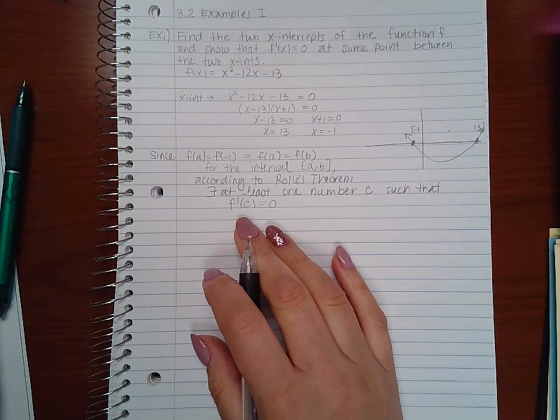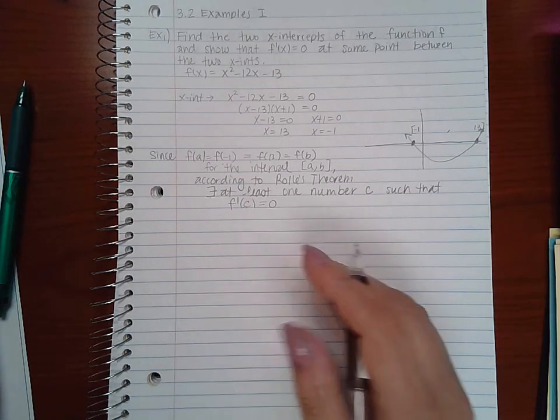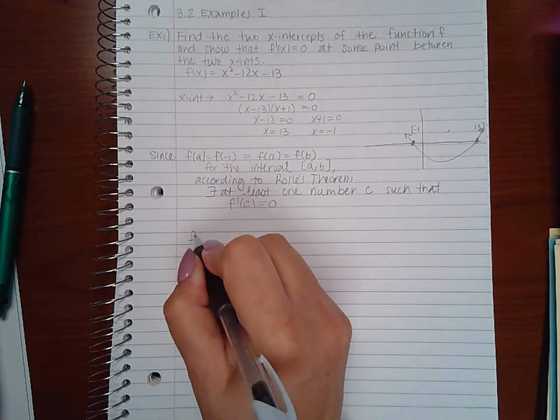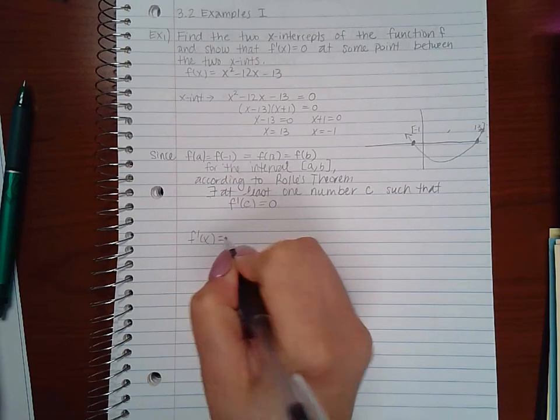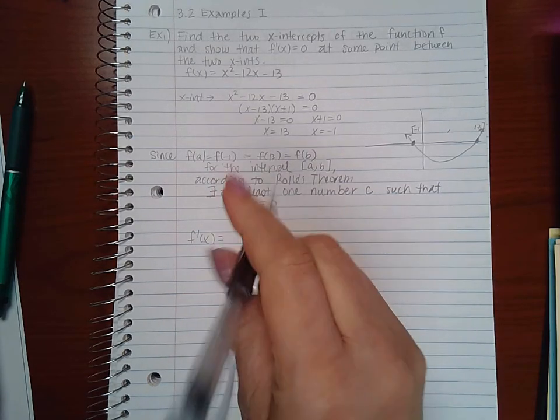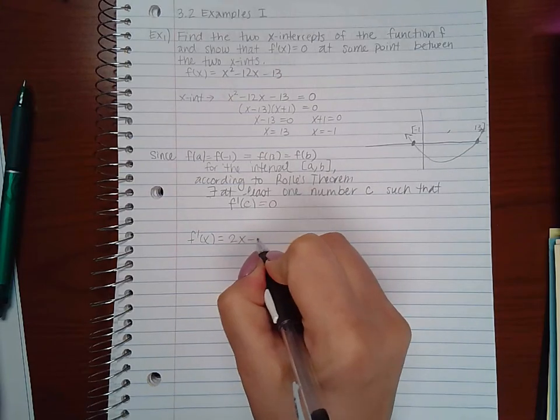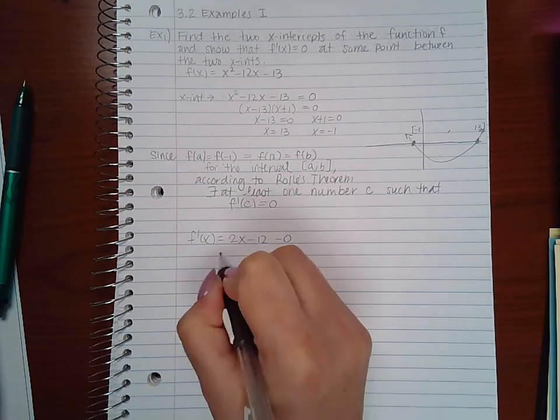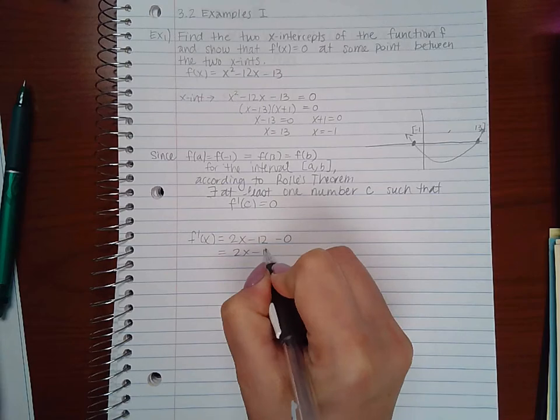If it wants us to find that value, then what we would need to do is find f prime of x and set it equal to 0. Well, the derivative of our function would be 2x minus 12 minus 0, or just 2x minus 12.